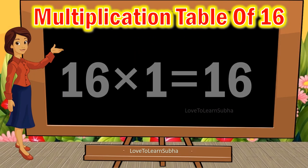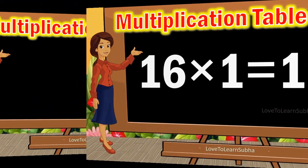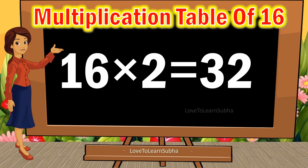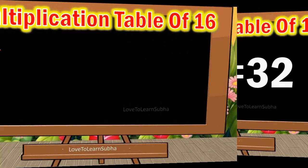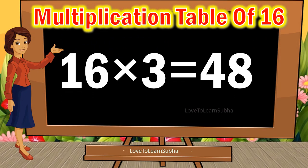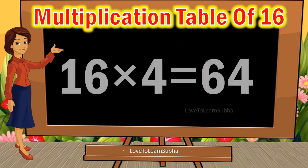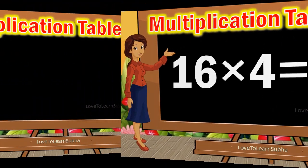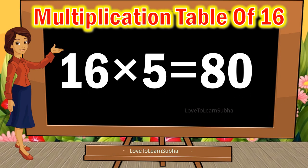16 ones are 16. 16 twos are 32. 16 threes are 48. 16 fours are 64. 16 fives are 80.